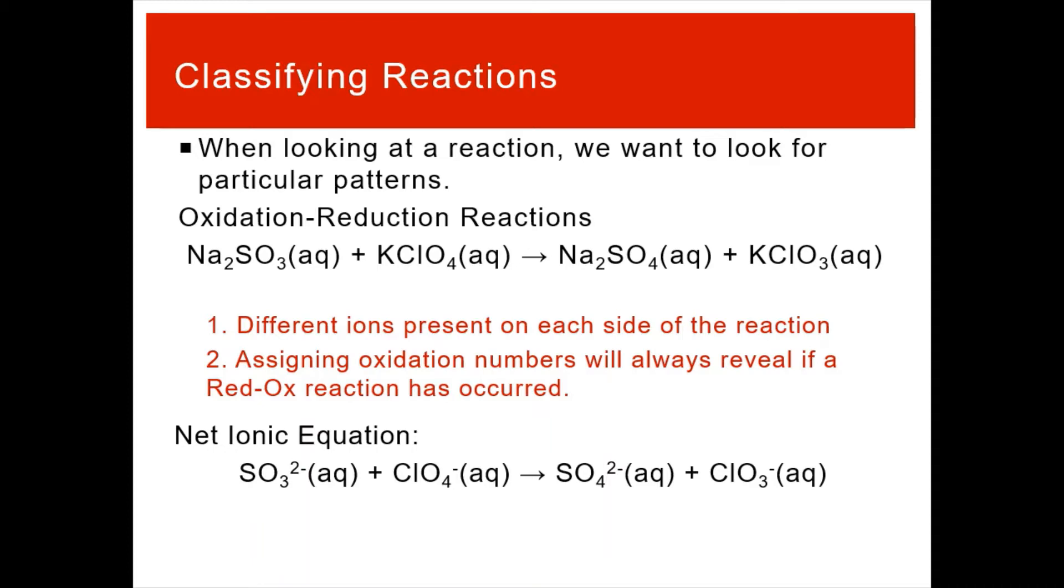So for example, in this net ionic, you can see that sulfite SO3 2- becomes SO4 2-. That is indicative of a change in ion. In all of our previous examples, we're looking at ions just swapping places or becoming insoluble. Here, the actual ions have changed. If the ions change, that means you're dealing with an oxidation reduction.